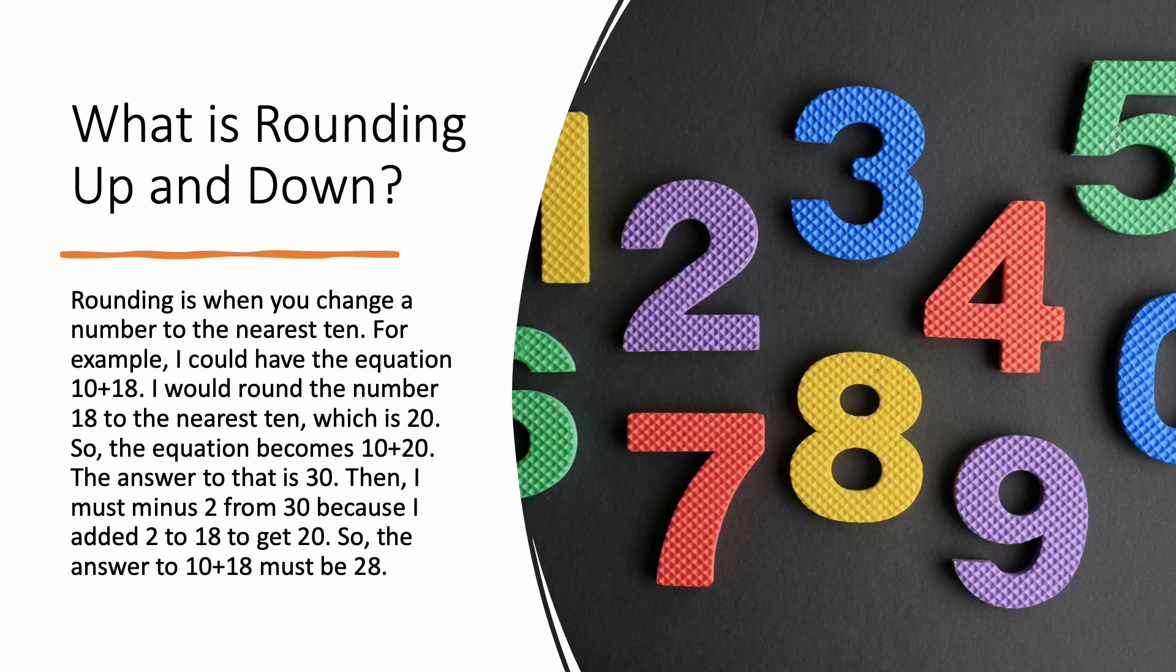which is 20. So the equation becomes 10 plus 20. The answer to that is 30. Then I must minus 2 from 30 because I added 2 to 18 to get to 20. So the answer to 10 plus 18 must be 28.